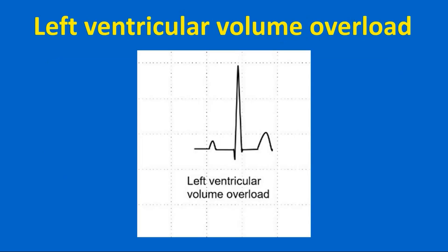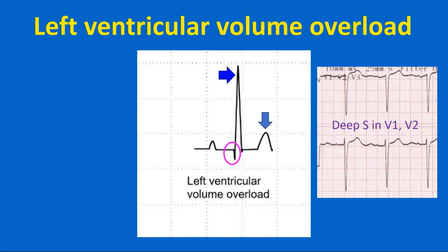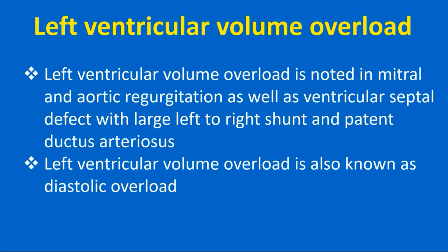Left ventricular volume overload is characterized by small narrow Q waves, tall R waves with upright T waves in lateral leads, and deep S waves in leads V1 and V2. Left ventricular volume overload is noted in mitral and aortic regurgitation, as well as ventricular septal defect with large left-to-right shunt and patent ductus arteriosus.